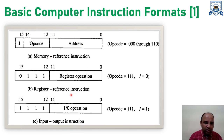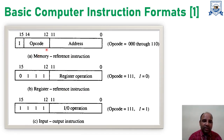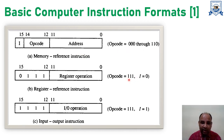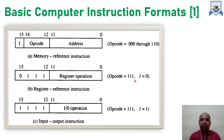Moving to the register reference instruction: the opcode is still represented by bits 12, 13, and 14, as discussed for the memory reference instruction. However, if the value at those bit positions is now 111 — triple 1 — rather than 000 through 110 which is valid for memory reference, then a value of 111 in the opcode field indicates either a register reference instruction or an input-output instruction.